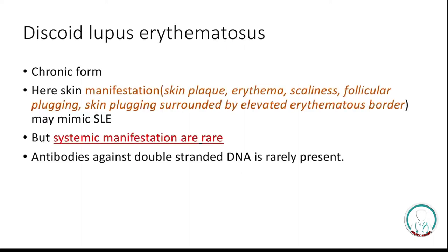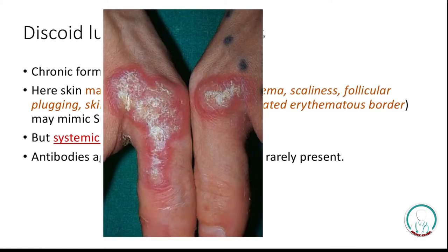Discoid lupus erythematosus is a chronic form, as already mentioned. Manifestations include skin plaques, erythema, scaliness, follicular plugging, and elevated erythematous borders, which mimic SLE. However, systemic manifestations are rare, and antibodies against double-stranded DNA are rarely present in this disease.